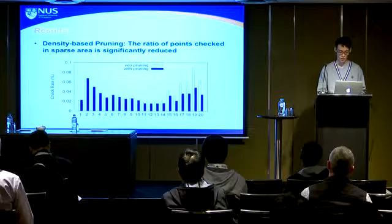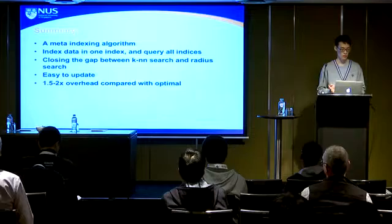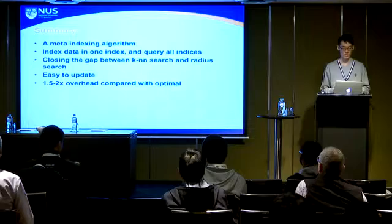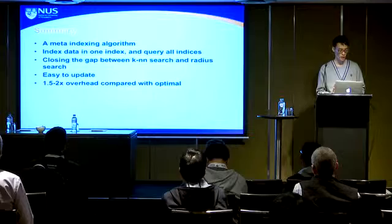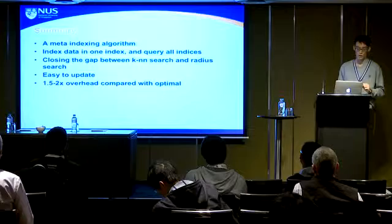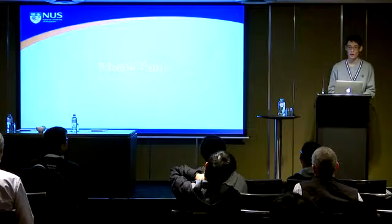In summary, we propose a meta-indexing method called selective hashing. The key idea is that each data point is indexed in only one index, while queries are made across all indexes. For the high-dimensional KNN search problem, this closes the gap between KNN search and radius search complexity. The method is easy to update, and compared with the optimal achievable solution, it has only a 1.5 to 2 times overhead.